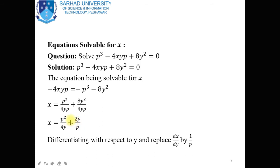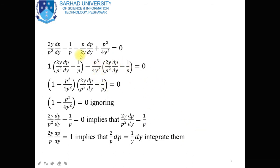The actual purpose is to eliminate P because P is the differential operator — P means dy/dx — and we need to solve the differential equation. So we want to eliminate P from this equation. For the elimination of P, since we solved the equation for X, we differentiate X equal to P squared divided by 4Y plus 2Y divided by P with respect to Y, and then replace dx/dy by 1 over P, because dy/dx is equal to P. After differentiating with respect to Y, we have 2Y divided by P squared times dP/dY, minus 1 over P, minus P divided by 2Y times dP/dY, plus P squared divided by 4Y squared, equal to 0.